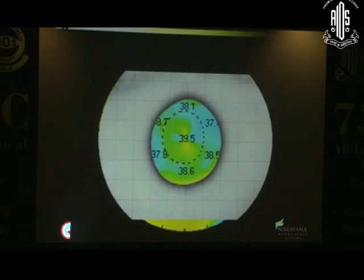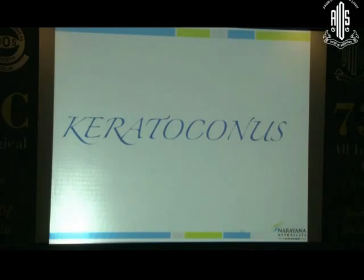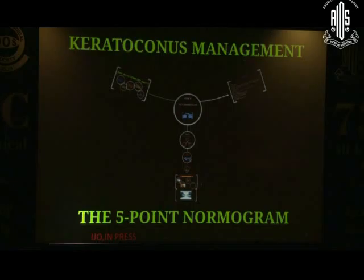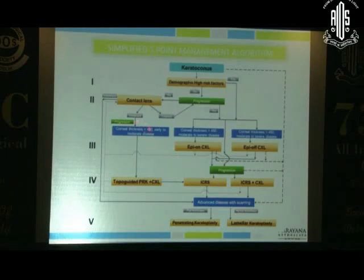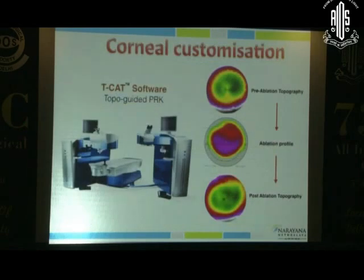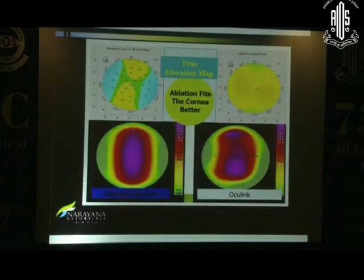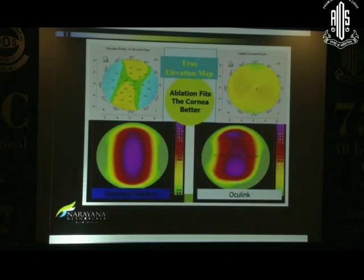Irregular astigmatism can come from a very irregular corneal surface with highly irregular aberrations. Keratoconus is one where the cornea is completely irregular. We just got a paper in press — we call it a 5-point nomogram with a complete step-by-step system, to be published in IJO shortly. Most keratoconus patients benefit from contact lenses, but when thickness is good, disease is mild to moderate, the cornea is clear without a Vogt's striae, and the patient is over 25 years old, you look at a combination of topo-guided PRK with cross-linking. This makes the cornea more regular rather than a standard 6 mm zone ablation.